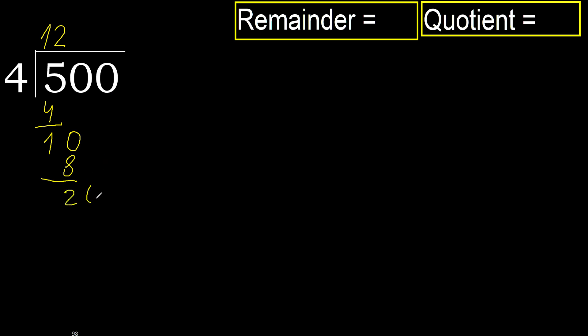Next. 20. 4 multiply by 5 is 20, it is not greater. 20 minus 20 is 0. Next.